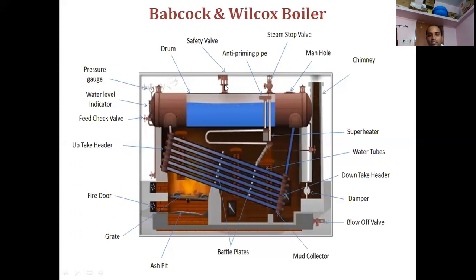The pressure gauge is mounted to check the level of pressure of the steam developed inside the boiler shell. The water level indicator checks the level of water present inside the shell. The fire door is where fuel is provided for combustion. Sometimes the water used contains mud or salt particles; these collect at the bottom in the mud collector and are removed with the help of the blow-off valve.